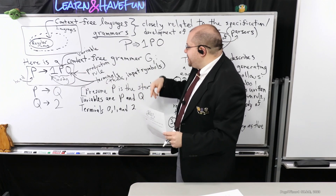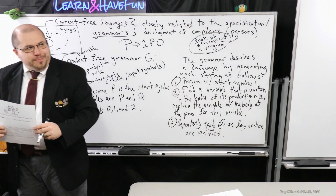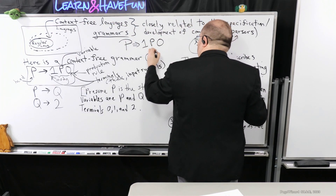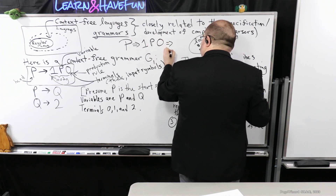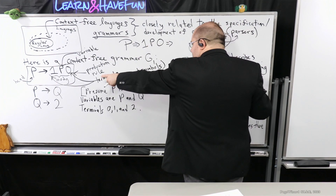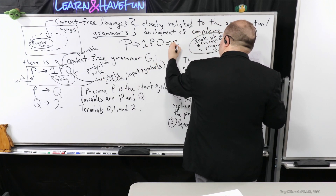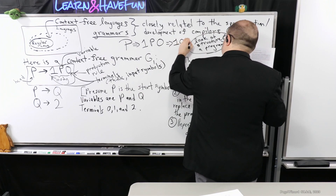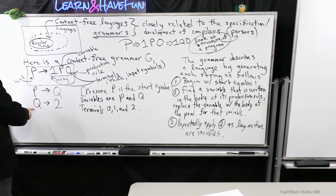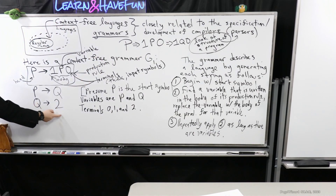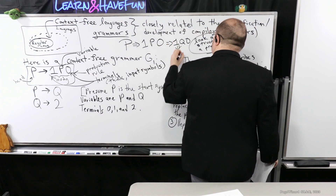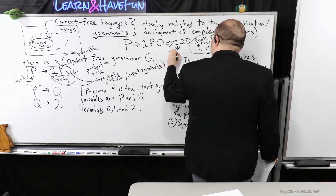I could apply the first rule again and replace P with 1 P 0 again, getting 1 1 P 0 0. Or I could apply the second rule. Let's apply the second one—I look at the variable P and apply the production rule. So 1 P 0 becomes 1 Q 0, because the second production rule says I can replace P with Q. Then notice I have a production rule for Q that says I can replace Q with 2, ending up with 1 2 0.